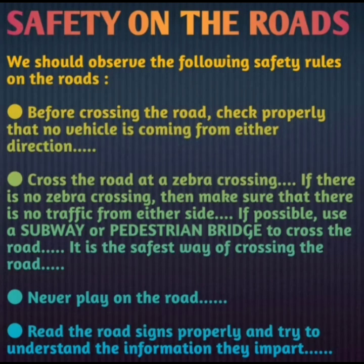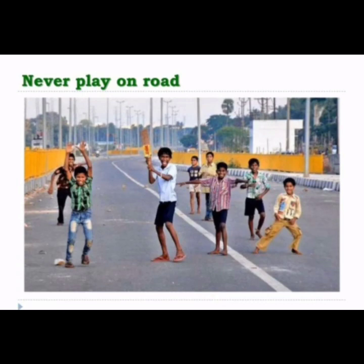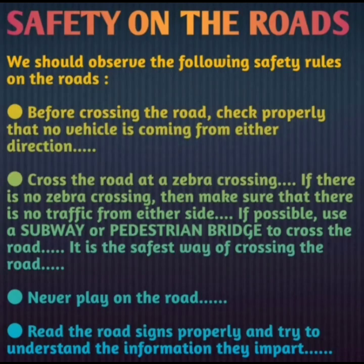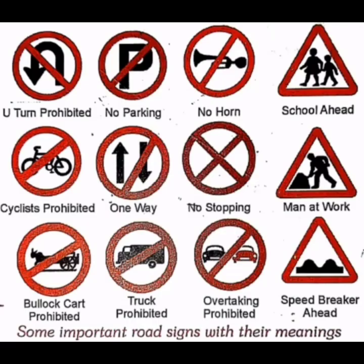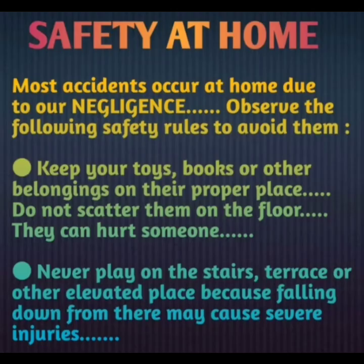The next point is: never play on the road. For outdoor games, there are parks or open spaces in our homes. We should never play on the road because some vehicle may be moving and we may have an accident. The last road safety point is: read road signs properly and try to understand the information they provide. When we are moving on the road we see different road signs — it is very important that we know about and follow them, because they help us to avoid accidents.